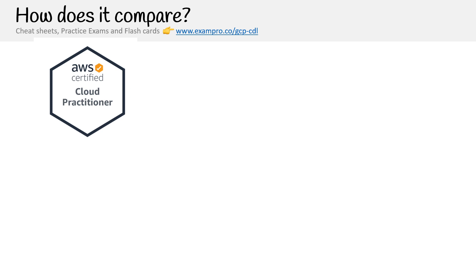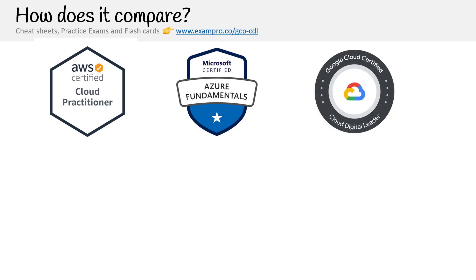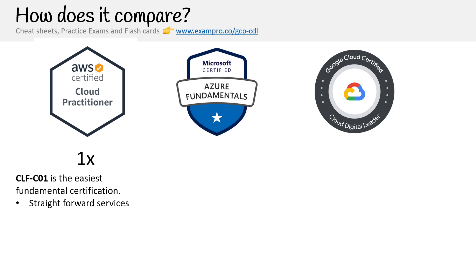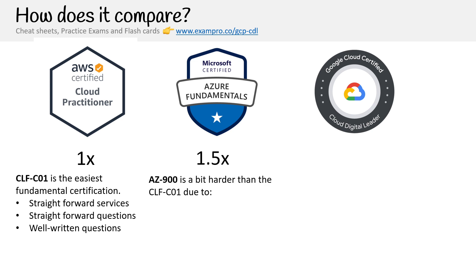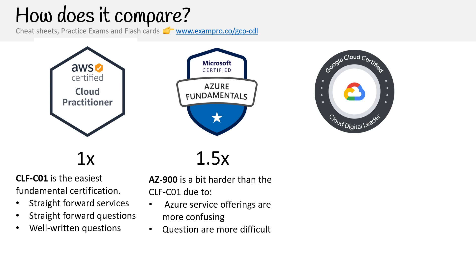How does the GCP CDL compare against the AWS Cloud Practitioner and the AZ-900? We'll use the Cloud Practitioner as the baseline for fundamental certifications because it was one of the earliest ones and also one of the best written. The CLF-C01 is the easiest fundamental certification — it has straightforward services, straightforward questions, and well-written questions, which makes it easy to pass. The AZ-900 is a bit harder than the Certified Cloud Practitioner, just because Azure's services are a little more muddled. Microsoft likes to meet everyone's demands and tacks on a lot of stuff, which adds confusion. The questions are slightly more difficult in how they're worded, so I'd say it's 1.5 times harder.